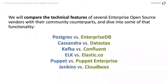The specific companies we're going to look at today are Postgres vs. EDB, Cassandra vs. Datastax, Kafka vs. Confluent, ELK vs. Elastic.co, Puppet vs. Puppet Enterprise, and Jenkins vs. CloudBees. This isn't meant to take one stand or another. I'm very much a believer in the community upstream model, but I want to lay out objective details of the differences between these technologies.